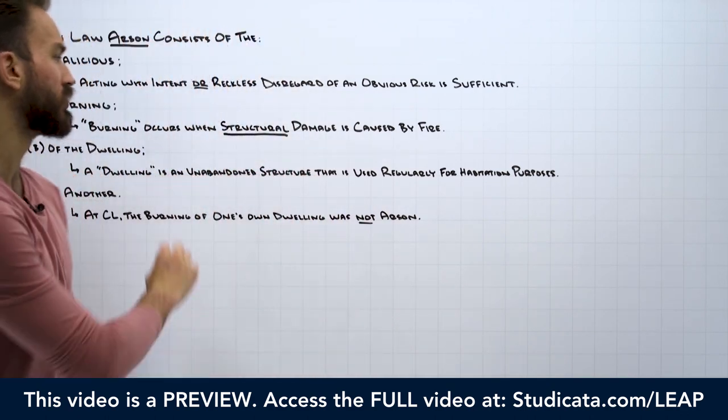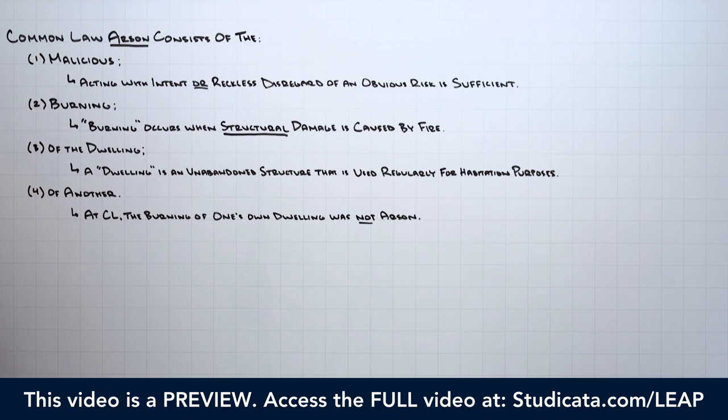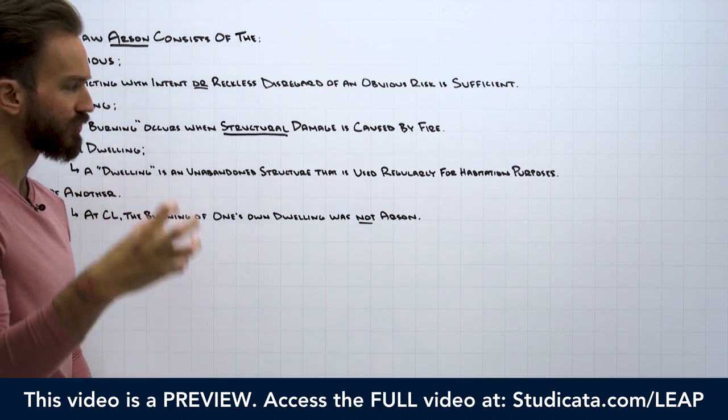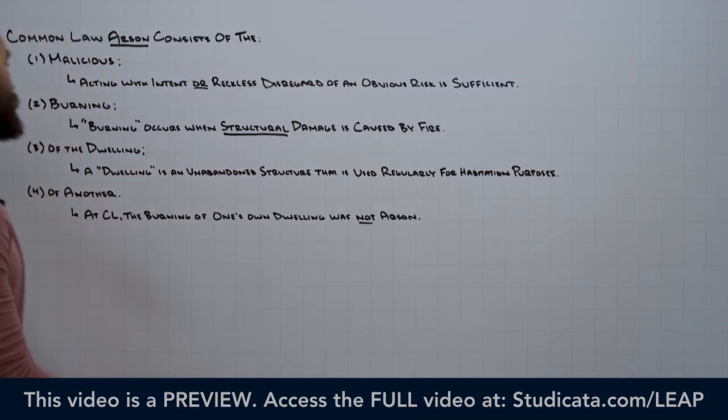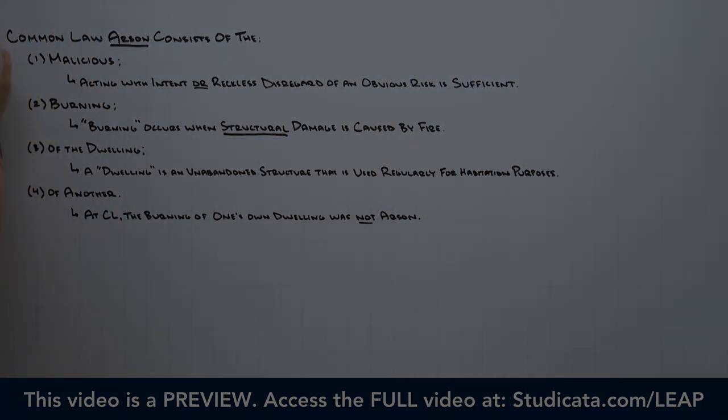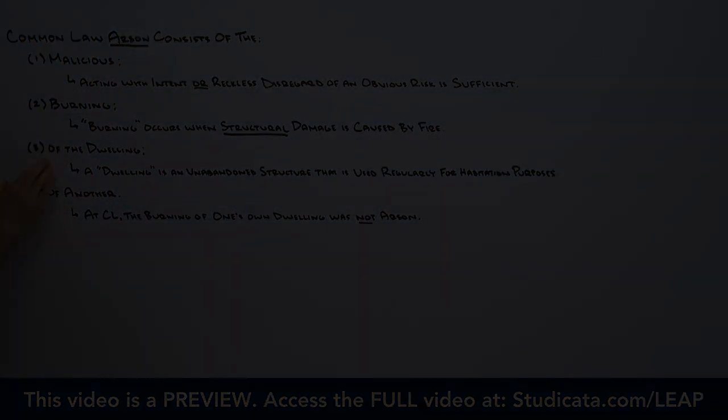We need actual structural damage, something that goes to the structural integrity of the dwelling, and it has to be caused by fire. That's our second element. Next, we need a malicious burning of the dwelling.